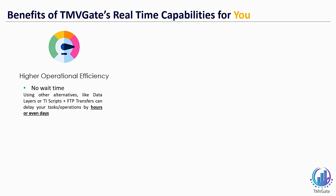Using TNVGate, when you make a change to your data in TM1, you can have it instantly reflected in Power BI. You won't have to run your TI script and you don't have to schedule an update of your data layer. Instead of waiting for hours or even days for your data to be refreshed, you can get what you need instantly.